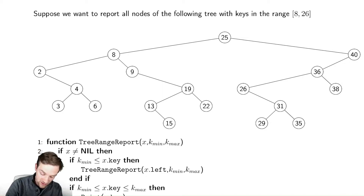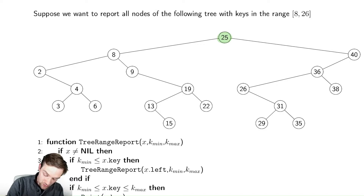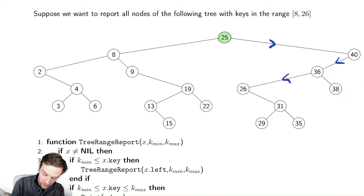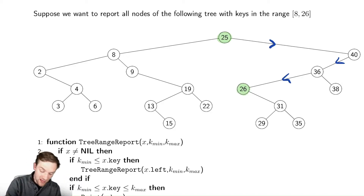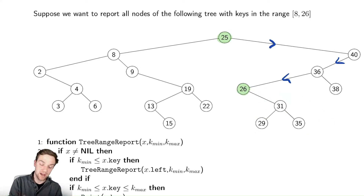We're going to start at the root. First we identify that 25 is in the range, and because 25 is within this range, we have to search both to the left and to the right. Searching to the right, we find 40 which is not in the range, so we search to the left. 36 is not in the range, and nothing to the right of 36 could be either, so we keep going left and find node 26. Notice it's possible that more copies of 26 would lie further down.